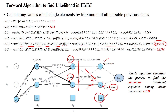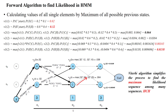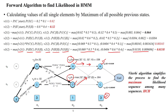For V3(2) — day 3 being hot — two paths exist: V2(1) × P(hot|cold) × P(3|hot), and V2(2) × P(hot|hot) × P(3|hot). Substituting these values, the maximum among both paths is 0.0138, so V3(2) = 0.0138.